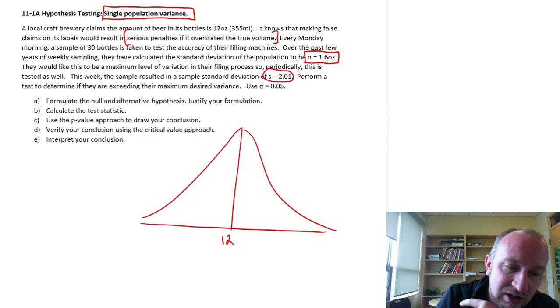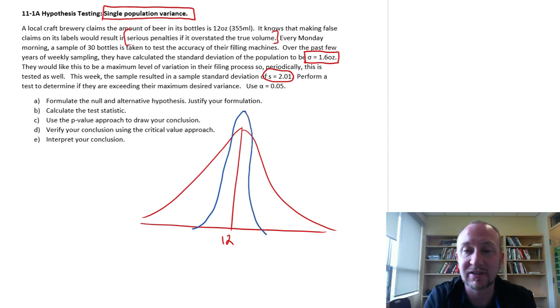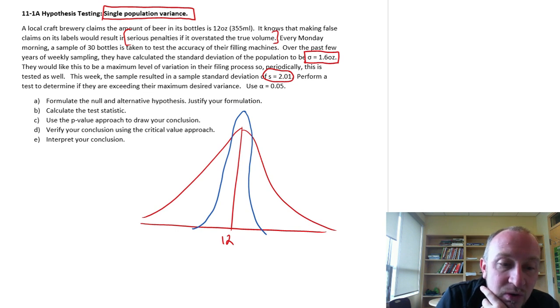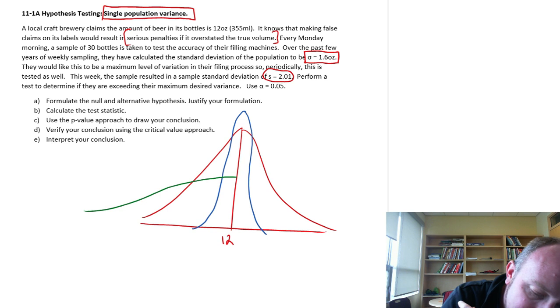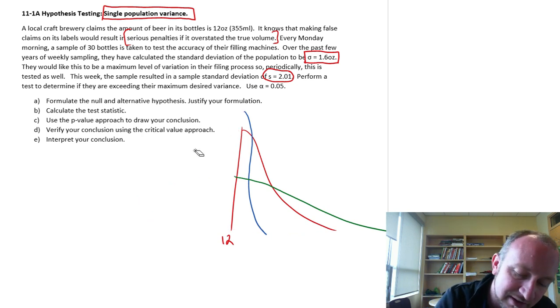Does the distribution look like this red distribution or is it maybe something like this where not only does it have a mean filling weight of 12 ounces but the distribution is all very tightly packed around that mean of 12 ounces or maybe it looks something like this where again that mean filling weight is 12 ounces but the variance is enormous so on average maybe they're on target but maybe some bottles are overflowing with beer and other bottles are only half filled. So we might want to also take into consideration the variance or the spread of the distribution of those filling volumes. So that's what this exercise is going to be.